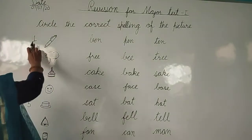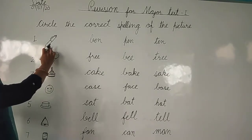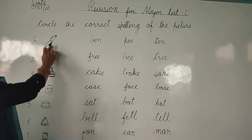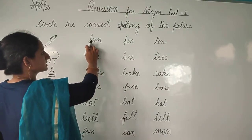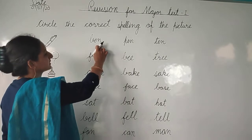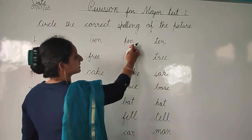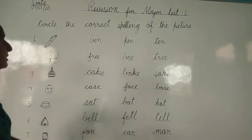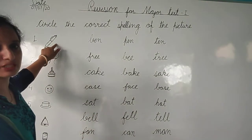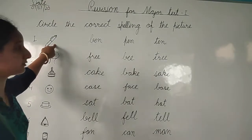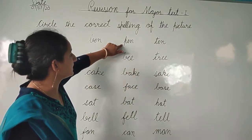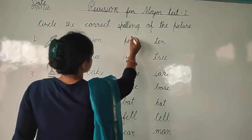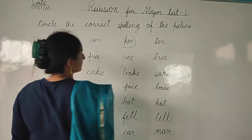First number — what is this? Identify this picture. This is pen. And now we will read these words. Tell me, what is the spelling of this picture? Yes, this is pen. Here is written P-E-N. So we will circle this spelling.